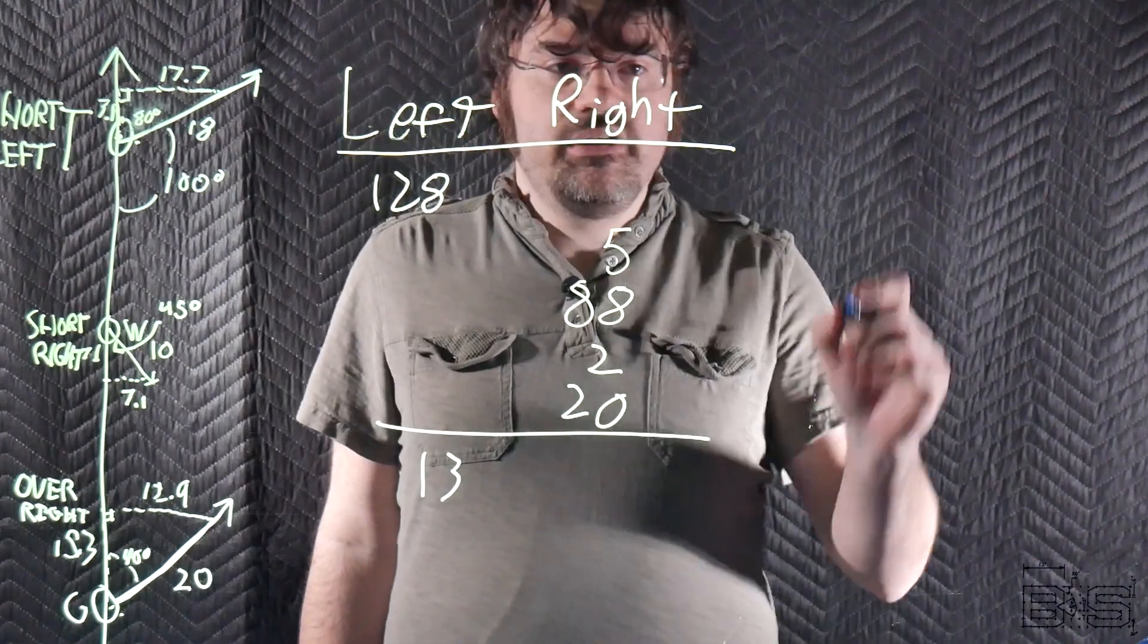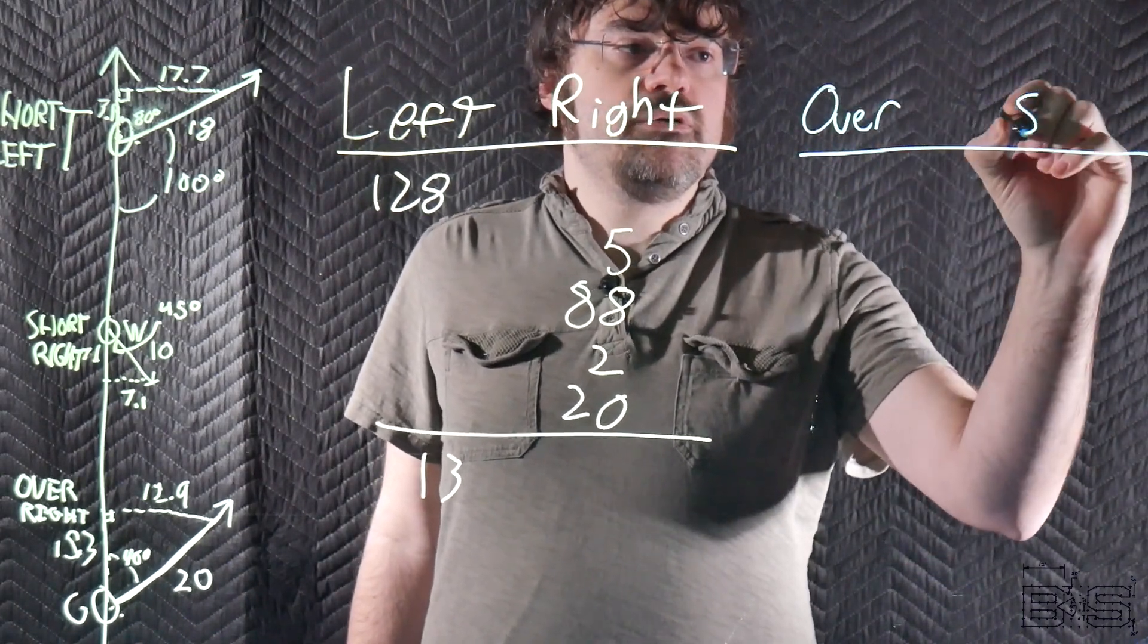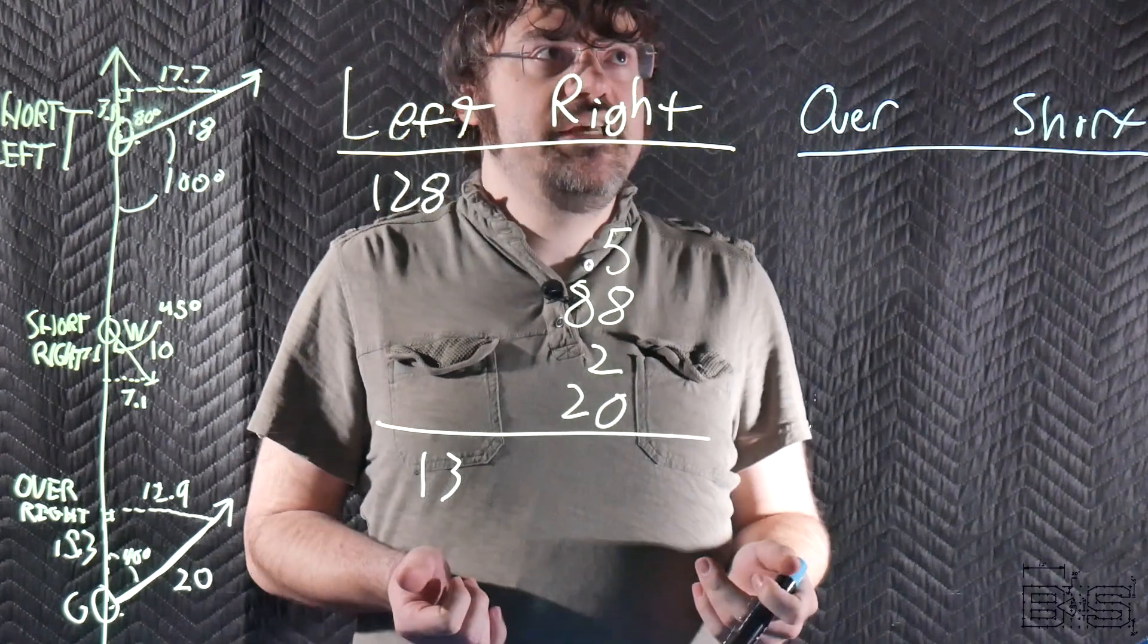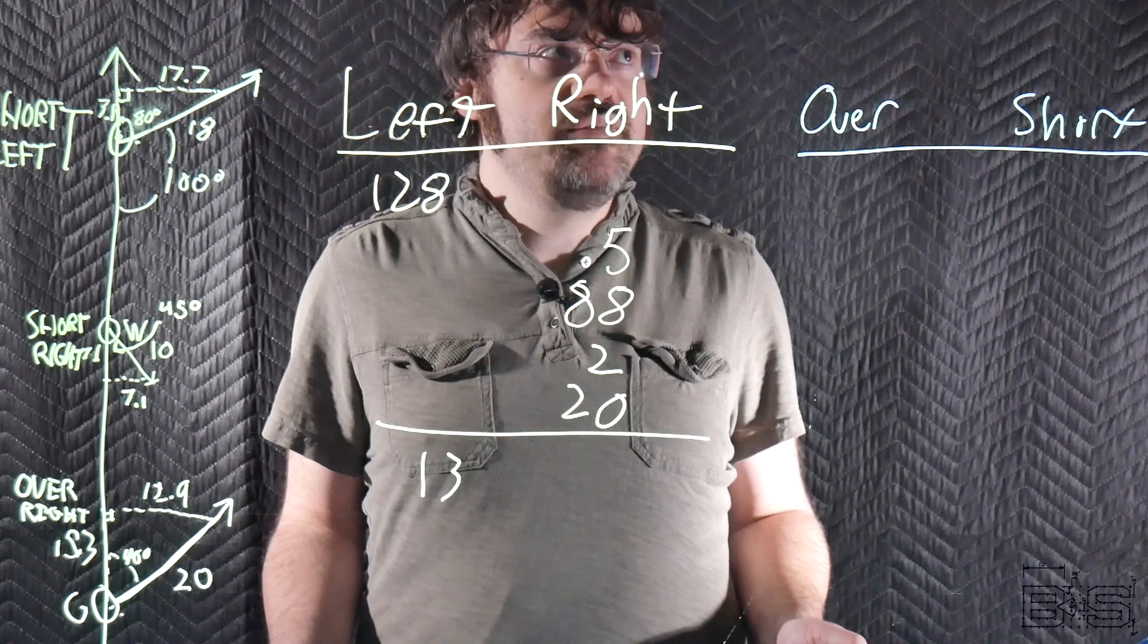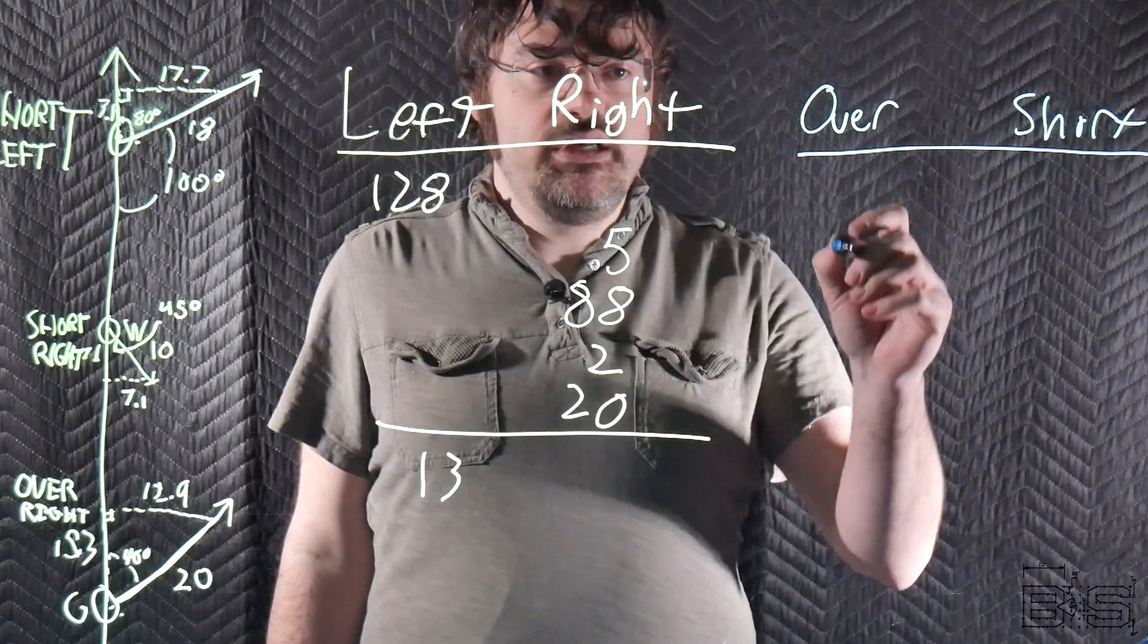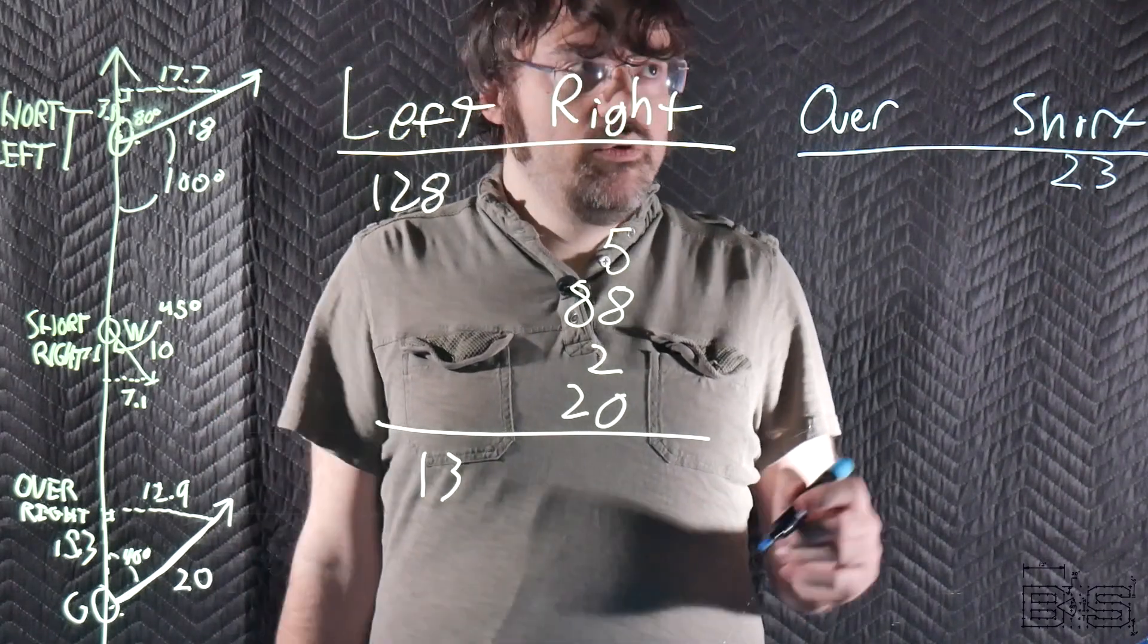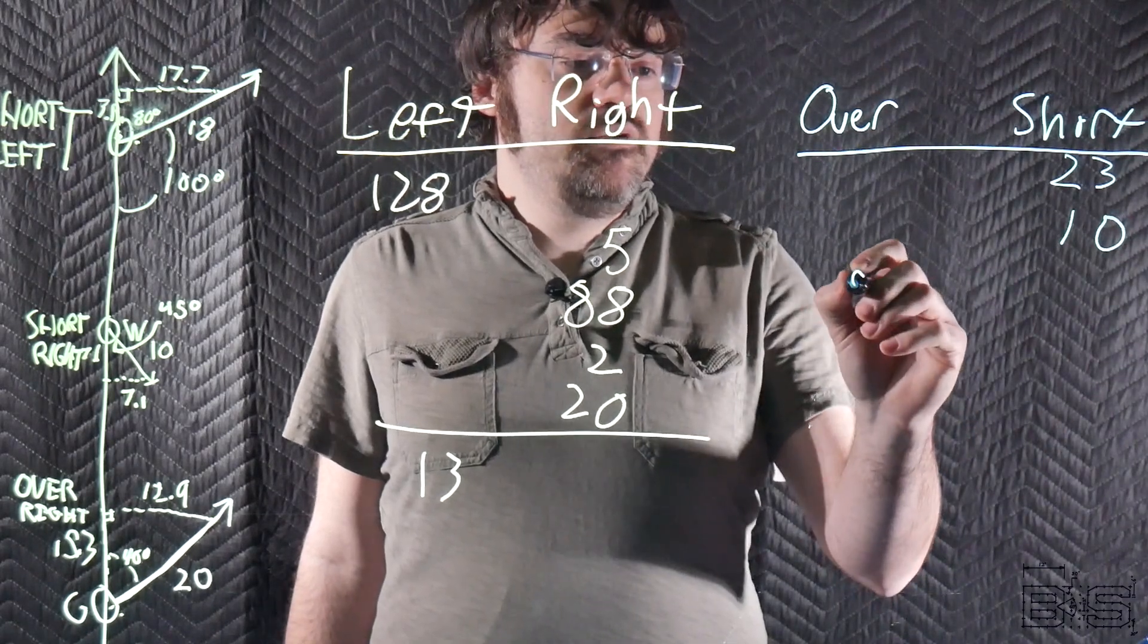Now let's work on our range errors. These can either be over or short. Target is moving away at 3.1 knots. Range table says per 10 is 75. So 3.3 times 75 is 23. Since it's moving away, this is going to be short by 23 yards. I think you guys get the idea. Wind is going to be short by 10 and gun is going to be over by 92.